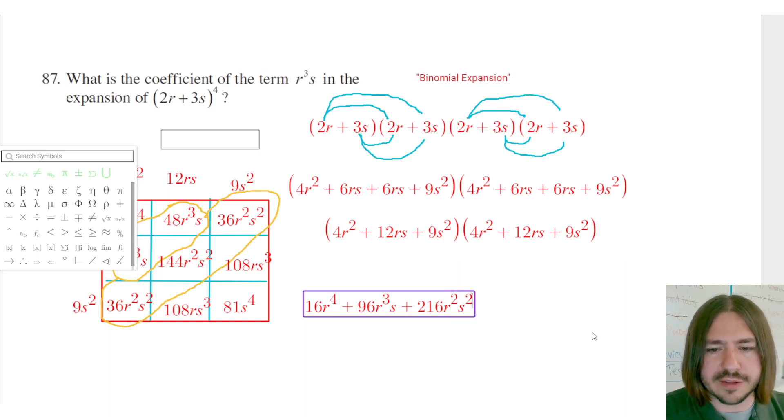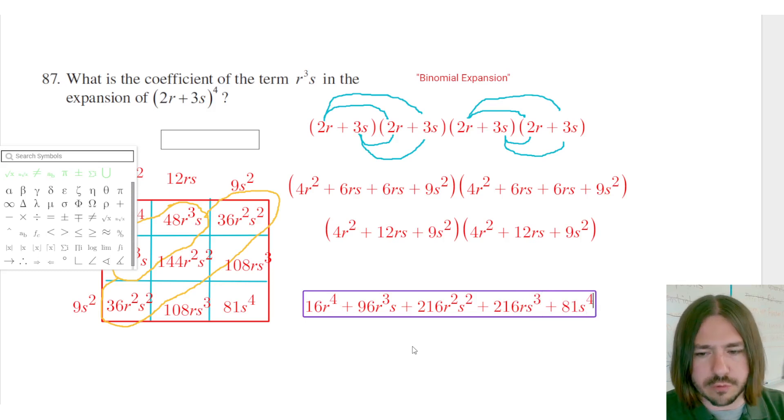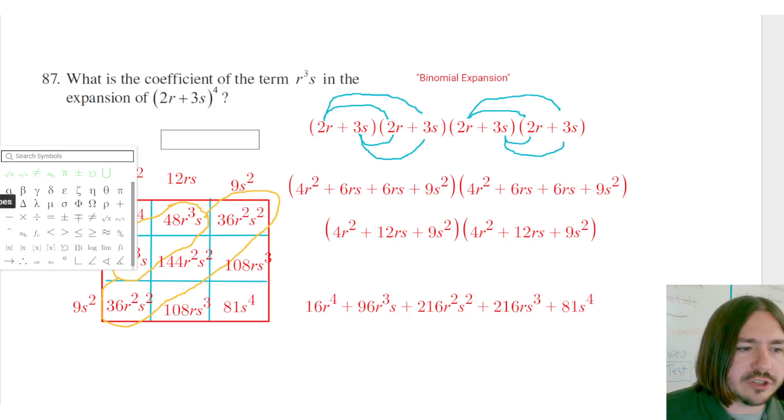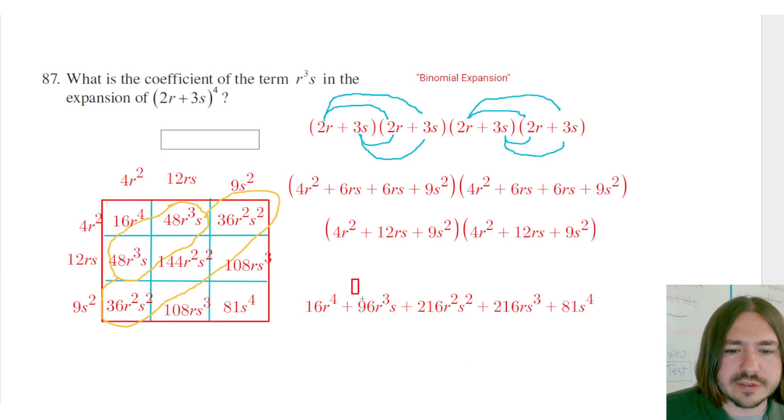I keep doing s to the s for some reason. Plus 108 plus 108 is going to be 216rs cubed. And then finally we have this 81s to the fourth.